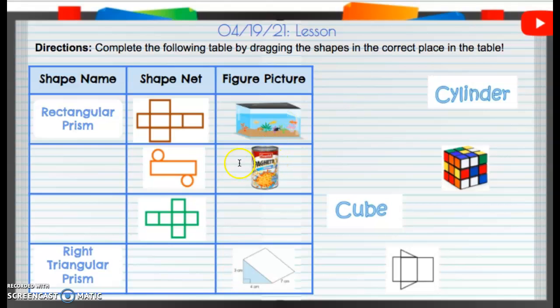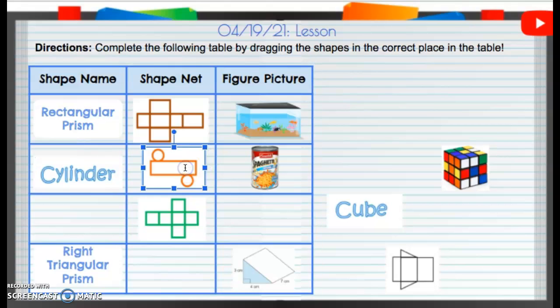If we take a look at the SpaghettiOs can, that is in the shape, that is kind of circular, or a cylinder. When you unfold it, it'll look like this. That's called a cylinder.